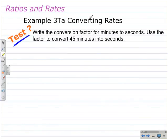Example 3TA, converting rates. Write the conversion factor for minutes to seconds, use the factor to convert 45 minutes into seconds. And here's how I would solve this problem. I write down what I'm starting with, 45 minutes. Then I want to multiply that by a fraction, the conversion factor. And I want to change it into seconds. So I put the seconds in the numerator, and I want to convert minutes into seconds, so I put minutes in the denominator.